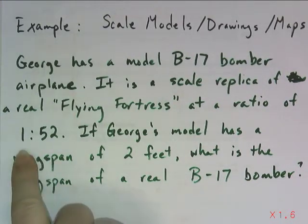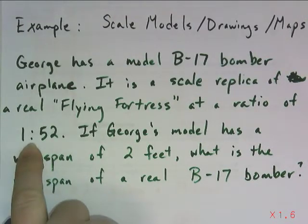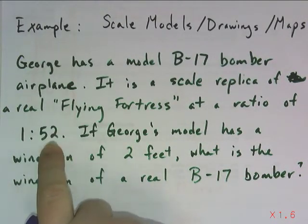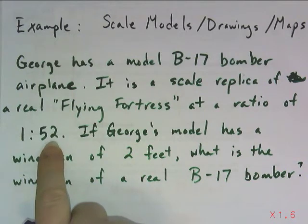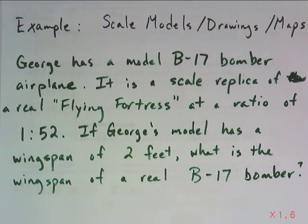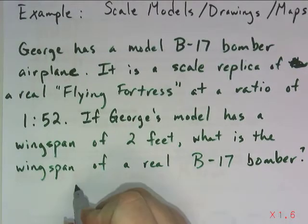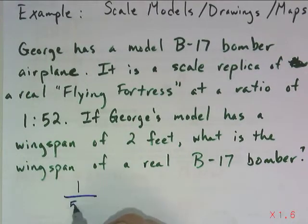Notice this ratio does not involve any units. That means 1 of whatever particular unit in the model is equivalent to 52 of whatever that particular unit is in the actual bomber plane. So if I'm talking about inches, 1 inch to 52. If I'm talking about millimeters, 1 to 52. In this case I'm talking about feet. So I can set up a proportion if I want to, that the model is 1 to 52 on the real thing.